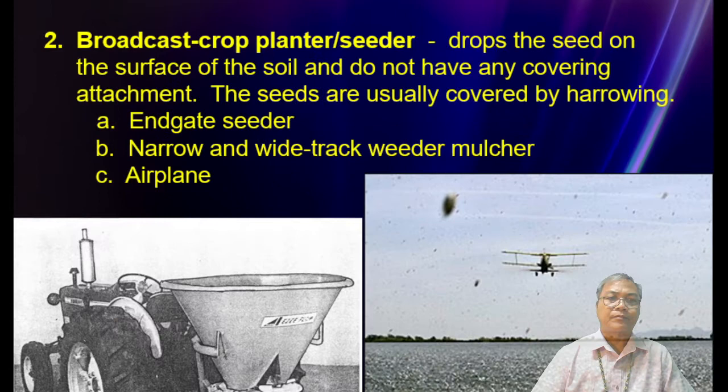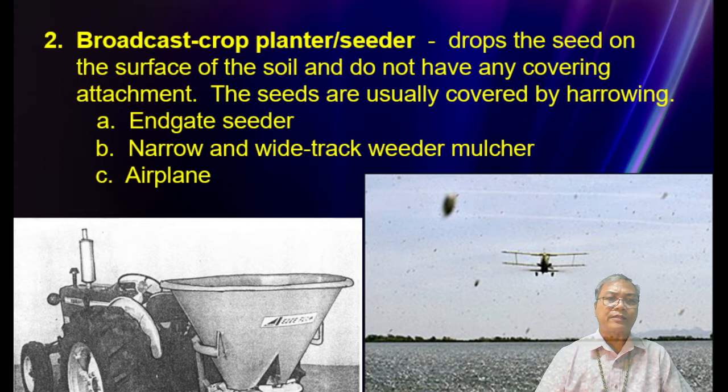The broadcast crop planter or seeder drops seeds on the surface of the soil and does not have any covering attachment. Seeds are usually covered afterwards by harrowing. For the gate seeder, we have narrow and wide track seeders or mulchers, and broadcasting can also be done using an airplane.